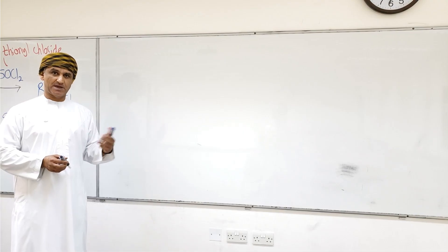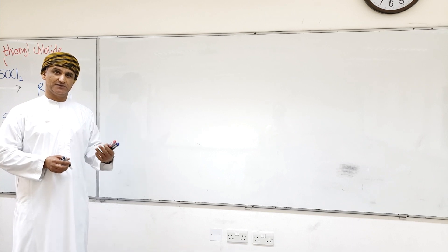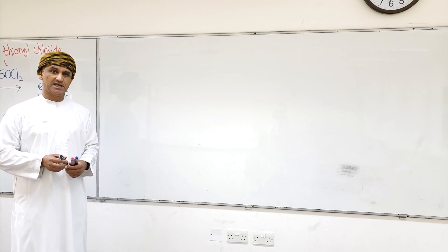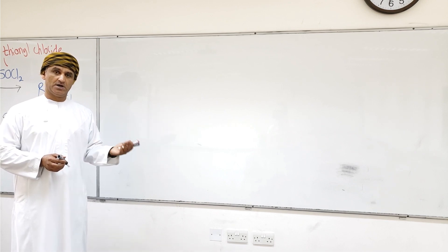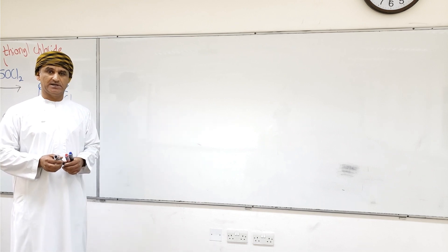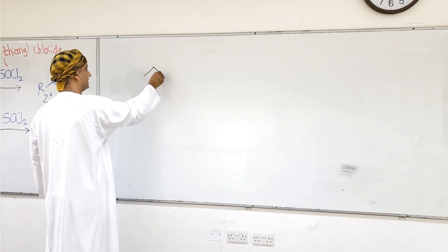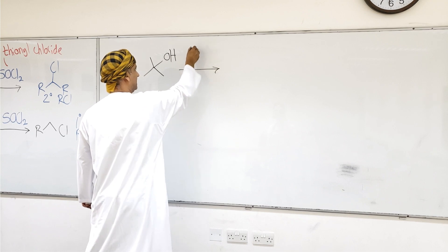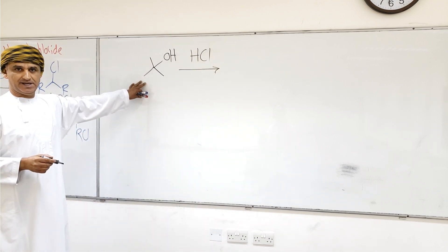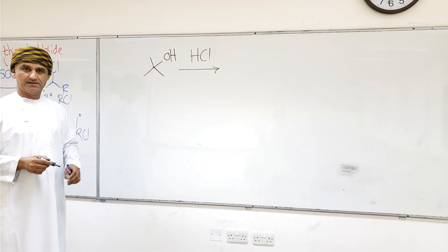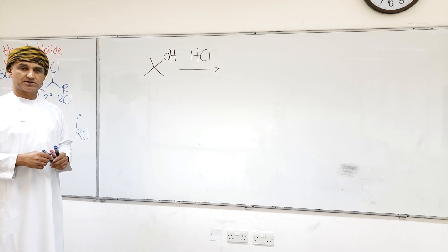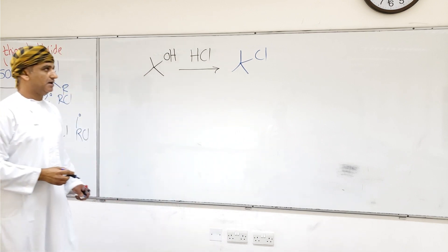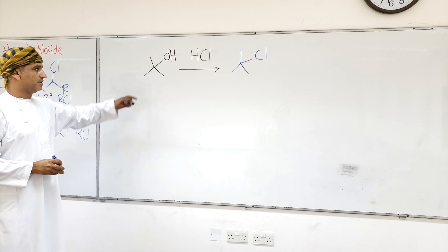Let's now take examples for the preparation of alkyl halides from alcohols. We can make alkyl halides from tertiary alcohols by reacting the tertiary alcohol with HX. If we take this tertiary alcohol and react it with HCl, the corresponding tertiary alkyl chloride is obtained as the product.